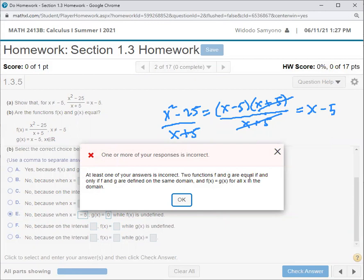At least one of your answers is incorrect. Two functions f and g are equal if and only if g is defined on the same domain and f(x) equals g(x) for all x. Okay, yeah, so